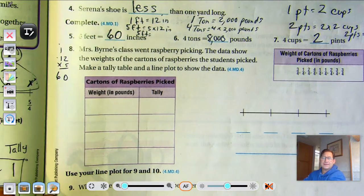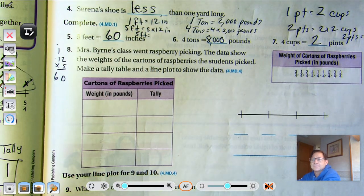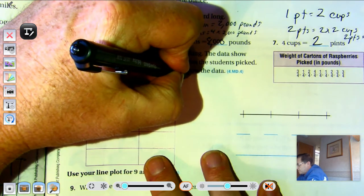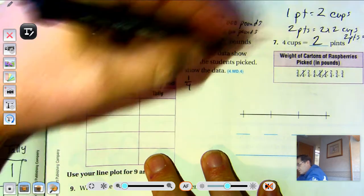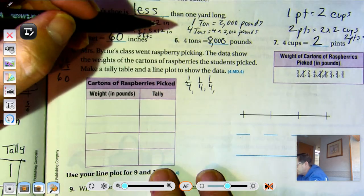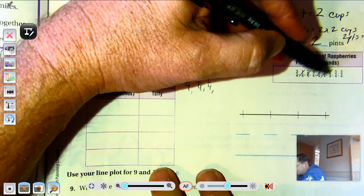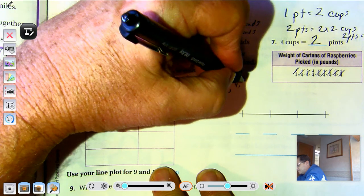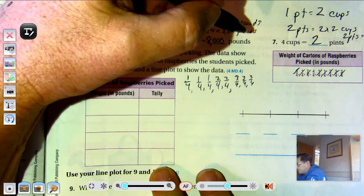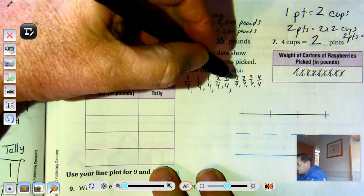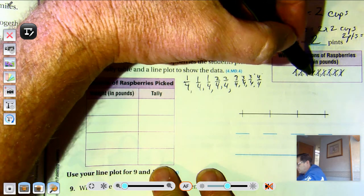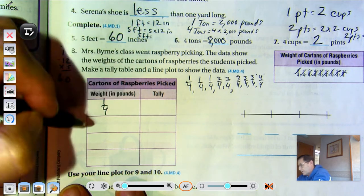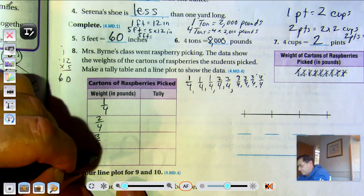Mrs. Byrne's class went raspberry picking. The data show the weights of the cartons of raspberries the students picked. Okay. So let's put these in order. Our smallest number is one fourth. We have one fourth appearing three times, two fourths twice, three fourths three times, and there's one four fourths.